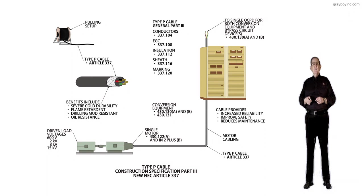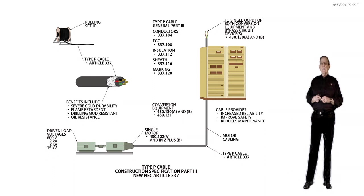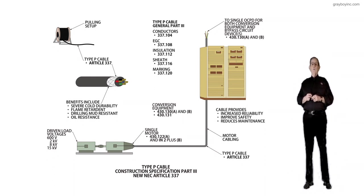But notice this voltage, 600 volts or less. You could also get the cable in 2KV, 8KV, and 15KV. Now you're in the new Article 311 and you're in Article 490.